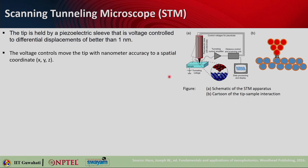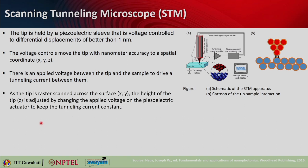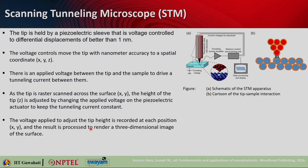In the STM setup, there is a piezoelectric tube with electrodes holding the tip, scanning the sample. The tip is held by a piezoelectric sleeve with voltage control to differential displacement of better than one nanometer, allowing nanometer accuracy in x, y, z coordinates. An applied voltage between tip and sample drives the tunneling current. As the tip is raster scanned across the surface in x, y, the height z of the tip is adjusted by changing the voltage on the piezoelectric actuator to keep the tunneling current constant. The recorded voltage adjustment at each x, y position gives the height, producing a 3D image of the surface.